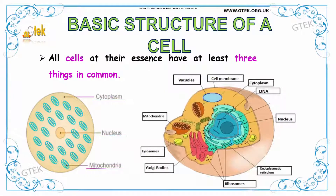The basic structure of a cell. All cells at the essence have at least three things in common. First one is cytoplasm, second one is nucleus, and third one is mitochondria. Here is the cell structure and it has mitochondria, cytoplasm, ribosomes, nucleus, and DNA represented.